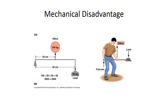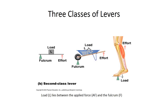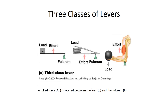Depending on the relative positions of the three elements — effort, fulcrum, and load — a lever belongs to one of three classes. A first-class lever has the fulcrum between the applied force and the load; an example is scissors. A second-class lever has the load between the applied force and the fulcrum; an example is a wheelbarrow or the gastrocnemius muscle. A third-class lever, the most common in the body, has the applied force located between the load and the fulcrum; an example is tweezers or the biceps brachii.